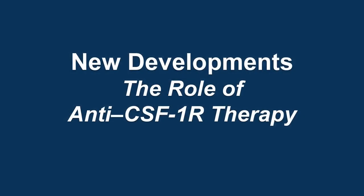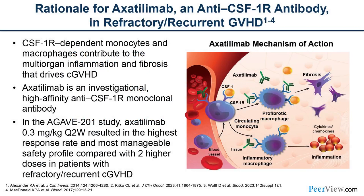Today's focus shifts to a new medication called axatilumab, which targets the CSF1 receptor and has become a very exciting new development in chronic graft-versus-host disease. The CSF1 receptor is identified on monocytes and macrophages, and it contributes to both inflammation and fibrosis in the development of chronic GVHD. Axatilumab is a monoclonal antibody targeting the CSF1 receptor, and it is promising in its potential to address both types of manifestations — inflammatory and fibrotic — in this heavily pre-treated patient population.